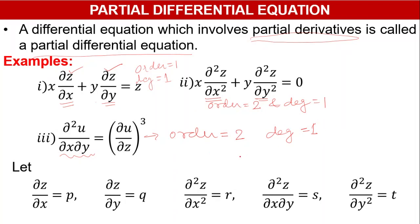In a partial differential equation, we always denote the first-order derivatives as follows: del z/del x is denoted by p, del z/del y is denoted by q, del²z/del x² is denoted by r, del²z/del x del y is denoted by s, and del²z/del y² is denoted by t.